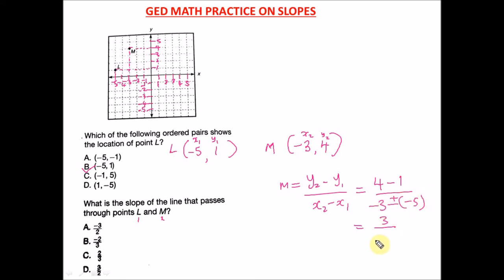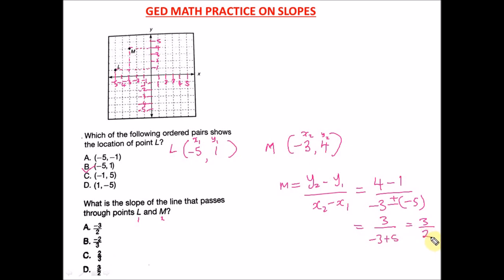Four minus one is three. For the denominator: negative three minus negative five — multiplying the negatives gives a positive, so we have negative three plus five, which equals positive two. So our slope is three over two. The answer is option D.